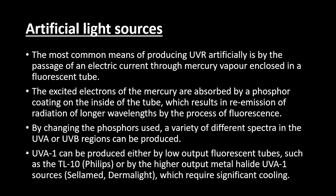Whatever phototherapy we use in our clinics, it is by artificial light sources. The most common means of producing ultraviolet radiations artificially is by passage of electric current through mercury vapors enclosed in a fluorescent tube. The hardware includes fluorescent tubes filled with mercury vapors charged by electric current. The excited electrons of mercury are absorbed by the phosphor coating on the inside of the tube, resulting in emission of radiations of longer wavelengths by the process of fluorescence.